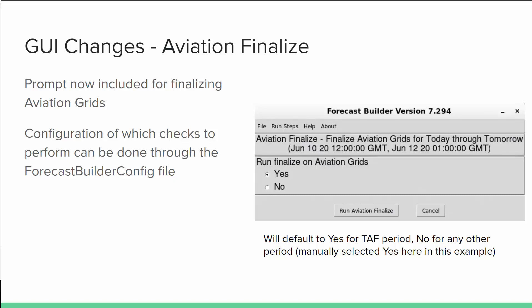Another GUI change is the Aviation Finalize step. There is now a prompt at this step to decide whether or not you would like to finalize the Aviation Grids. By default this will be set to no, except for the TAF period where it will be set to yes — for example, if you chose the 18Z TAF period. The configuration of what checks Aviation Finalize will perform can be done through the Forecast Builder config file.